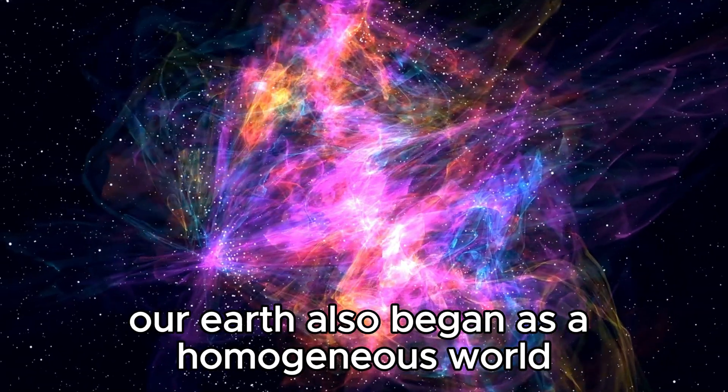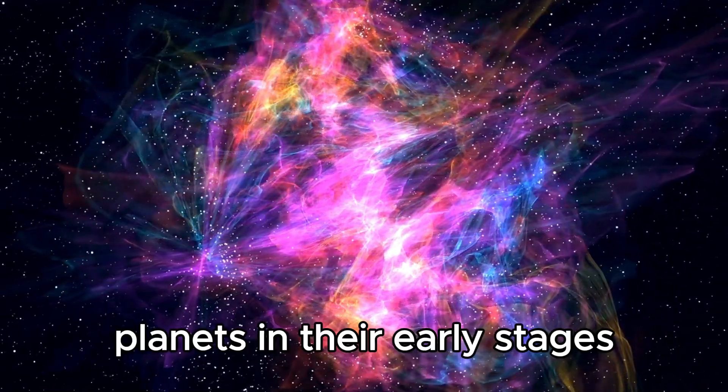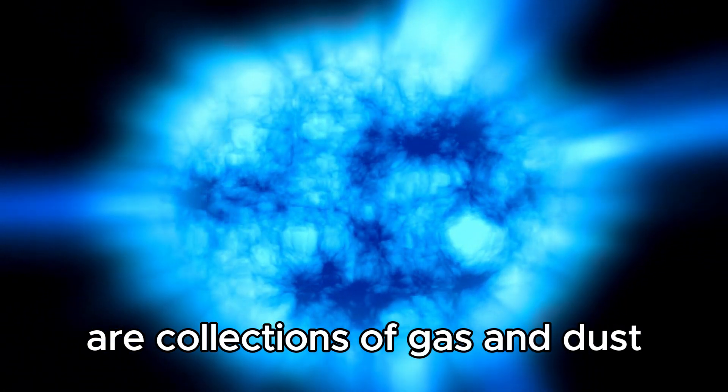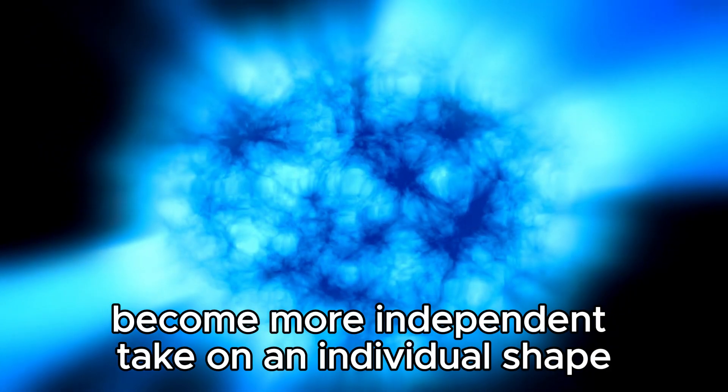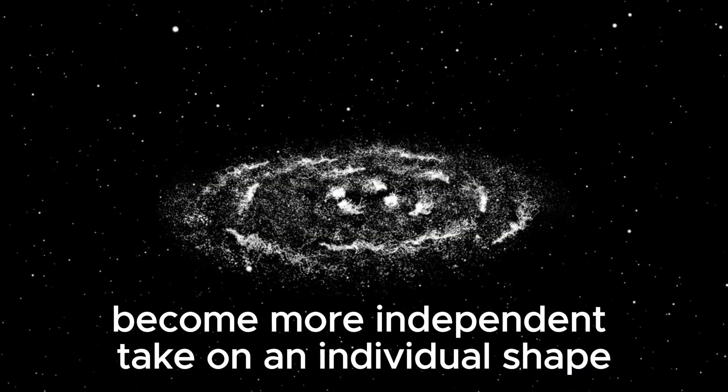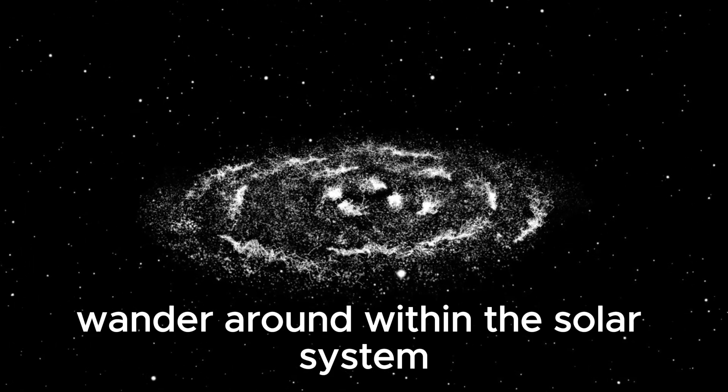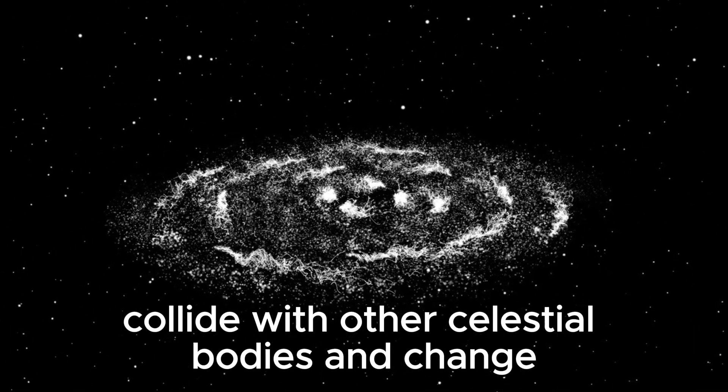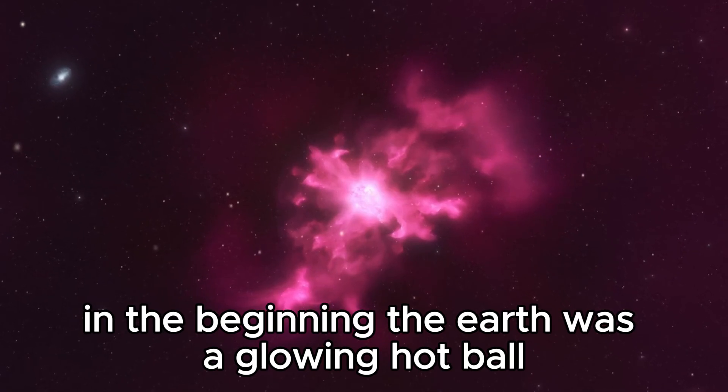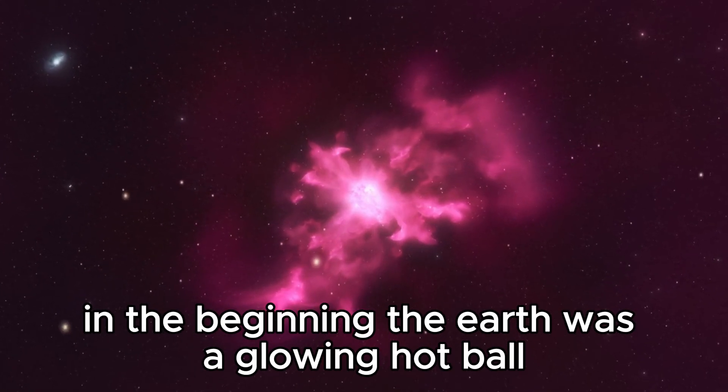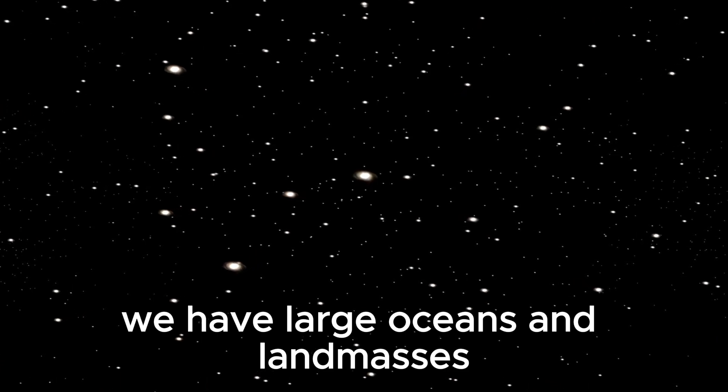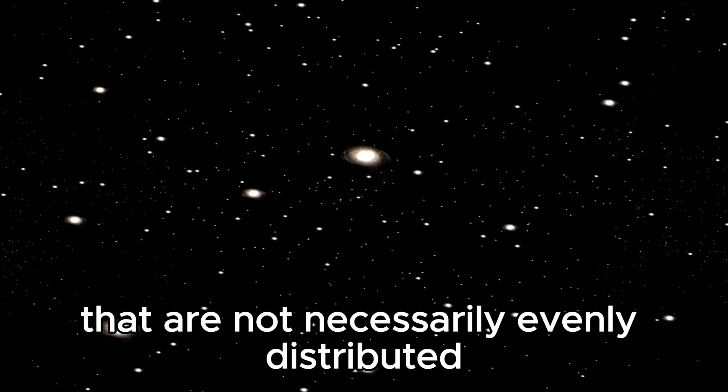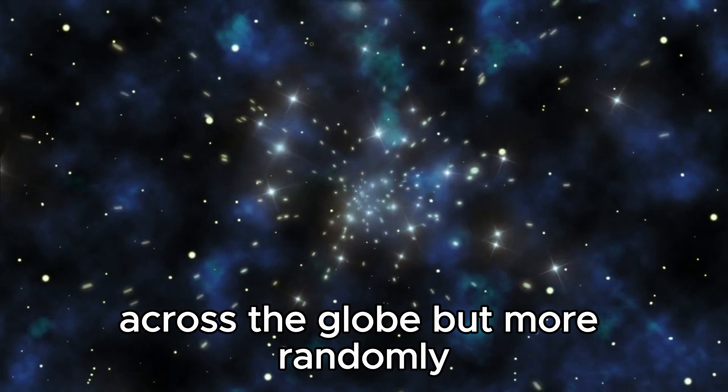Our Earth also began as a homogeneous world. Planets in their early stages are collections of gas and dust, just like early suns are. Then they slowly develop, become more independent, take on an individual shape, wander around within the solar system, collide with other celestial bodies, and change. In the beginning, the Earth was a glowing hotball, and the matter was evenly distributed. Then, a heterogeneous structure developed, at least on the surface. We have large oceans and landmasses that are not necessarily evenly distributed across the globe, but more randomly.